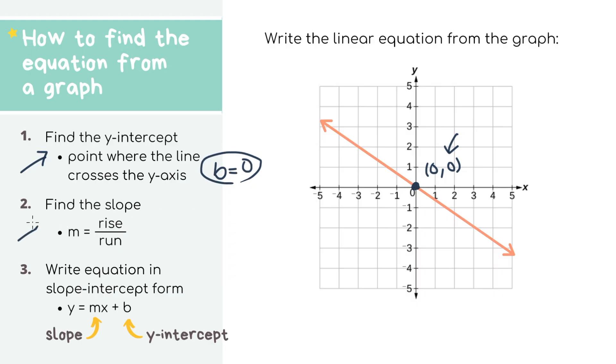Step two, find the slope. I see another point at 3, negative 2. To get our rise, we'll put our pencil over our first point. We need to go down by 2, so our rise is negative 2. And for our run, we need to go to the right by 3, so our run is positive 3. Based off of that, our final slope is negative 2 over 3.